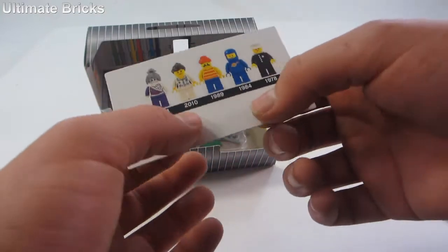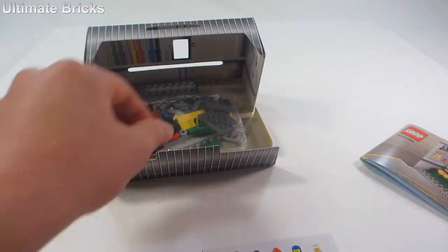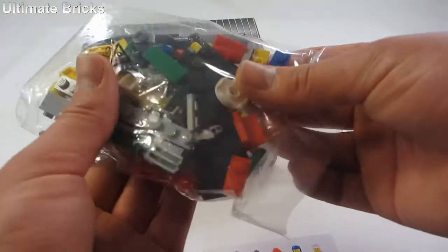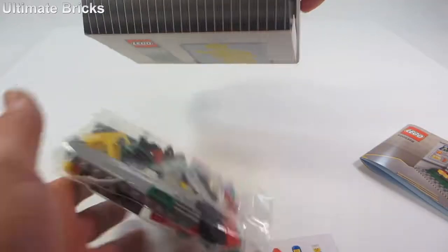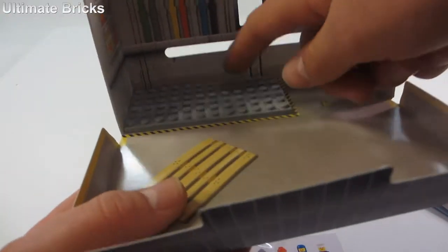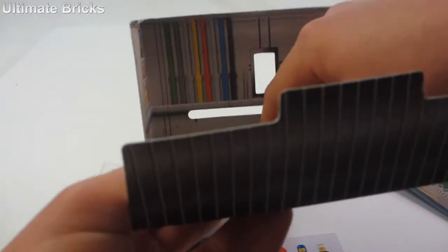Then we have another piece of card stock in there which shows the Minifigures. And then we have a bag of pieces that includes all the pieces. Keep in mind, that piece right there is glued in, so that is not removable.